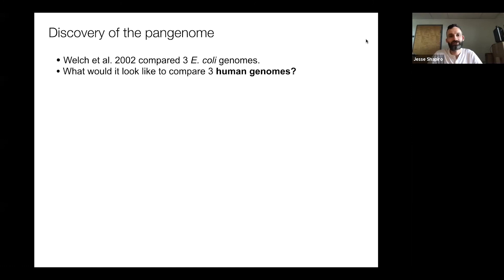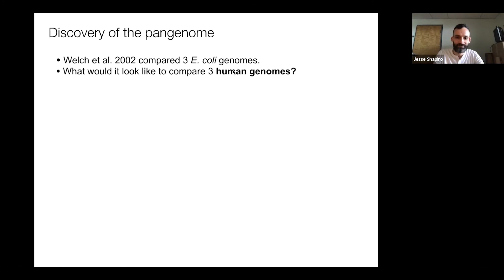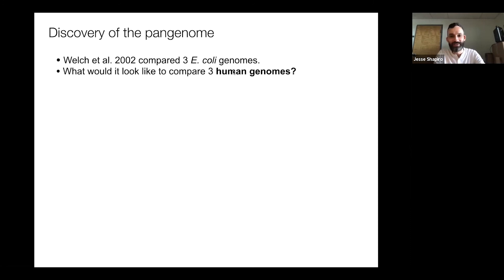If we compared three human genomes and asked what percentage of genes are shared — where you, me, and Celia share a homologue versus genes that might be unique to one of us — what percentage would be shared? Audience answers came in: most of it will be the same, 80%, not over 90%, 99%, 99.9%. That's right — it's something like 99 or even 99.9%. The vast majority of the 20,000 or so human genes are common to all humans.